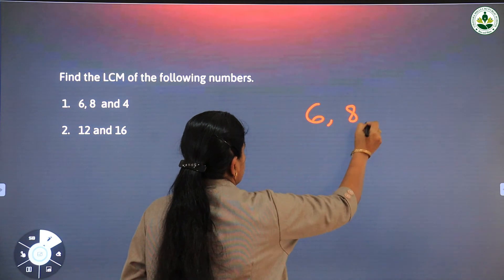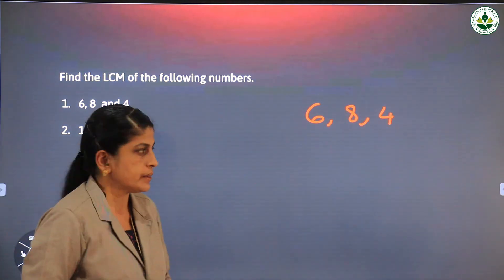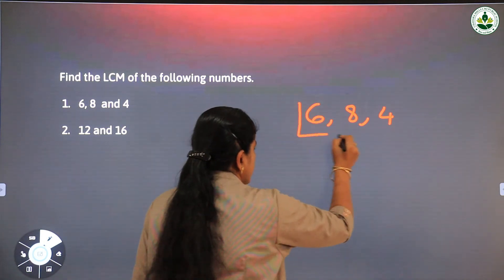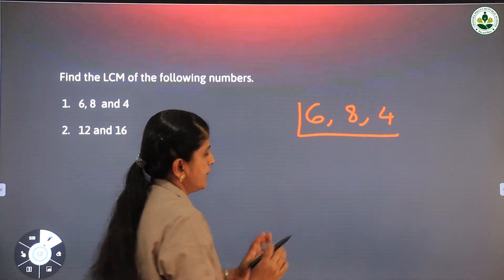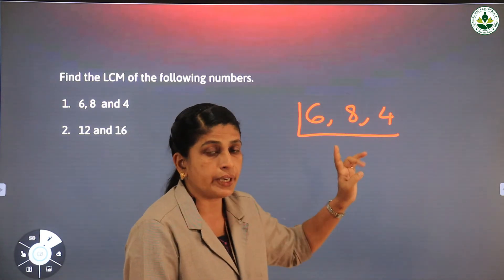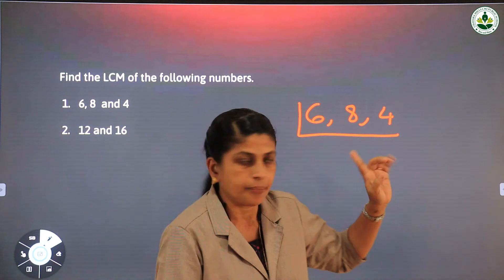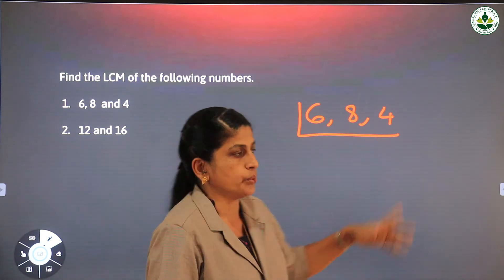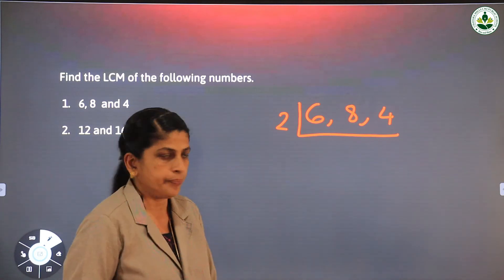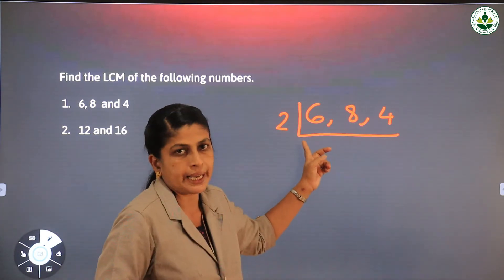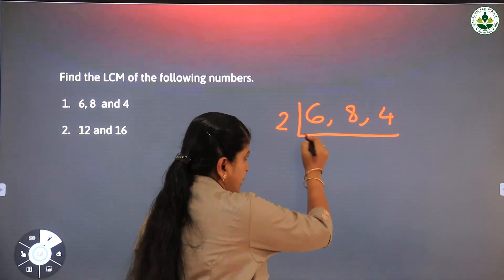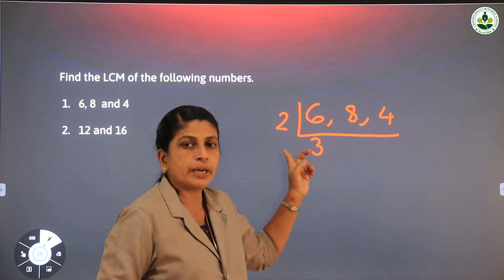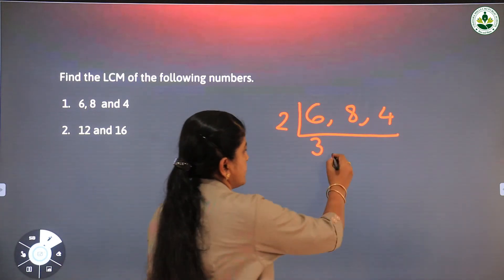To find the LCM by division method, write the given numbers: 6, 8, and 4. We can divide all three numbers by 2. We have studied the divisibility rule — all these numbers are even numbers, so we can divide them all by 2. Write the divisor 2 on the side. When we divide 6 by 2 we get 3, divide 8 by 2 we get 4, and divide 4 by 2 we get 2.